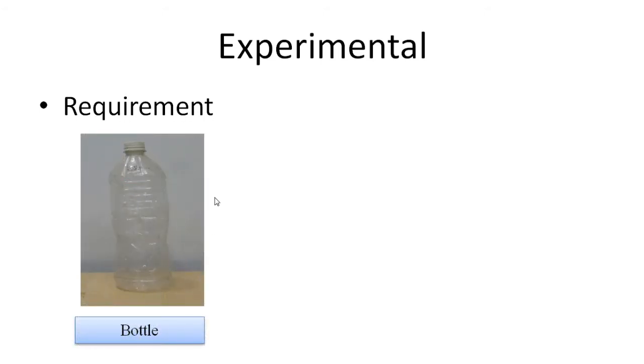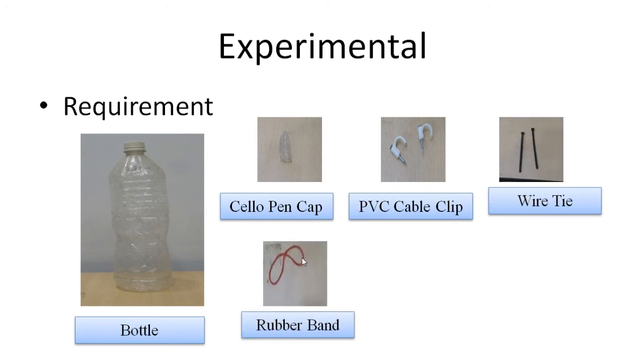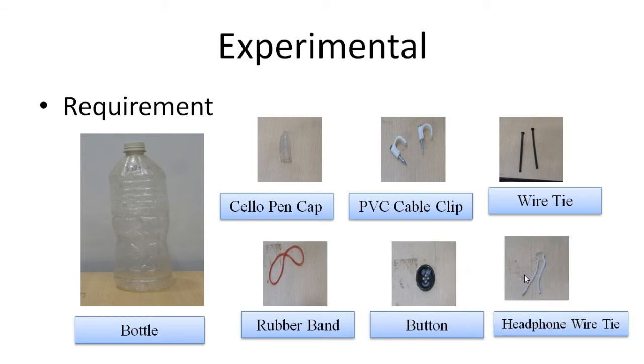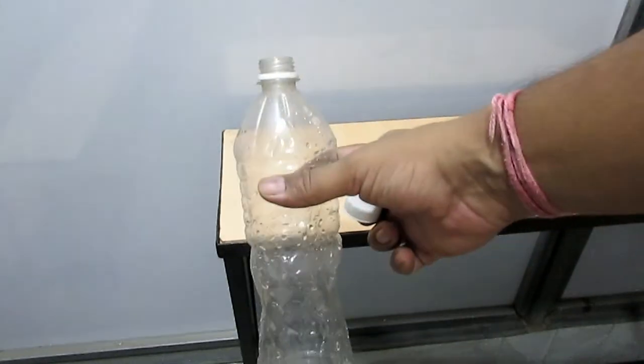Requirements: we will require bottle, one cereal, PVC cable clip that can be easily purchased from the market, wire tie, rubber band, button, and soft headphone wire tie. Take the bottle, fill it with water.